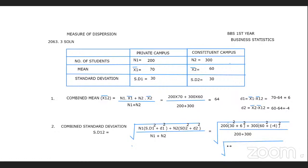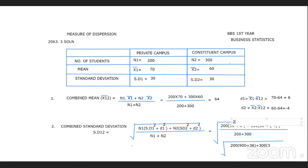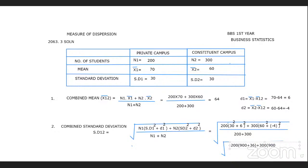Now substituting: 200 brackets SD1 squared (30 squared equals 900) plus D1 squared (36), plus 300 brackets SD2 squared (60 squared equals 3600) plus D2 squared (16).